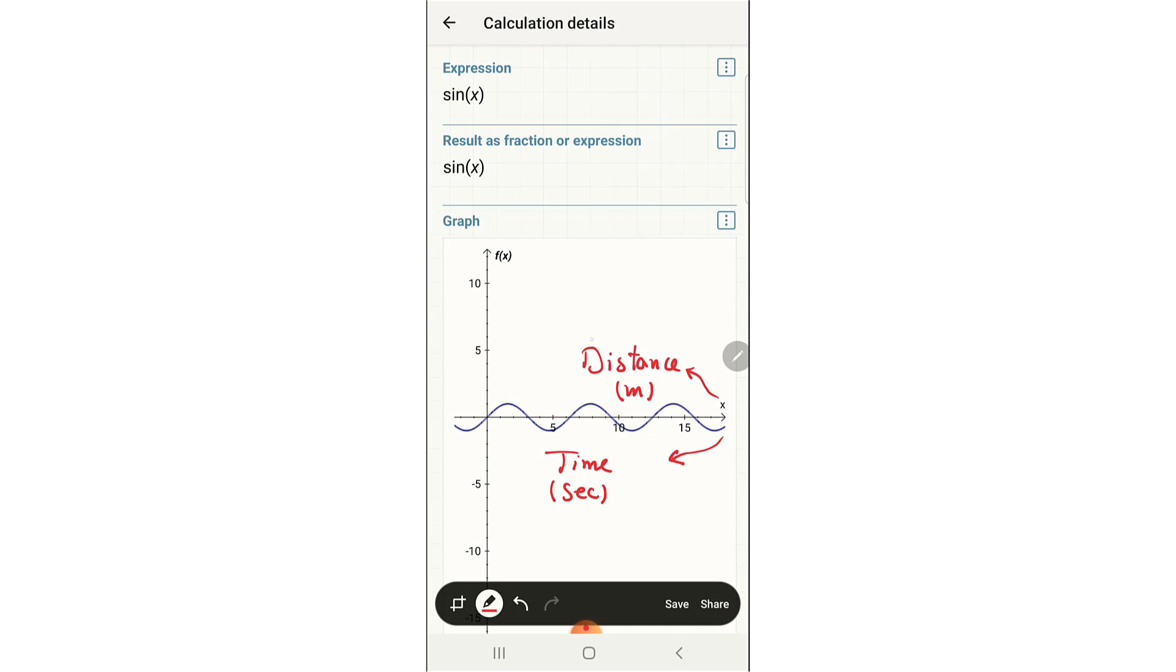The wavelength is defined as lambda equals 2 pi over alpha. Which is in this case, for sin x, alpha is 1, so the wavelength is simply 2 pi. And if the x-axis is in terms of time, we use the concept of period with capital T equals 2 pi over alpha, which is 2 pi for sin x.